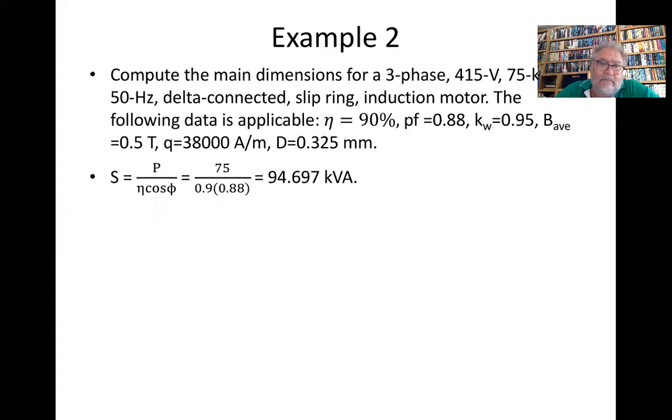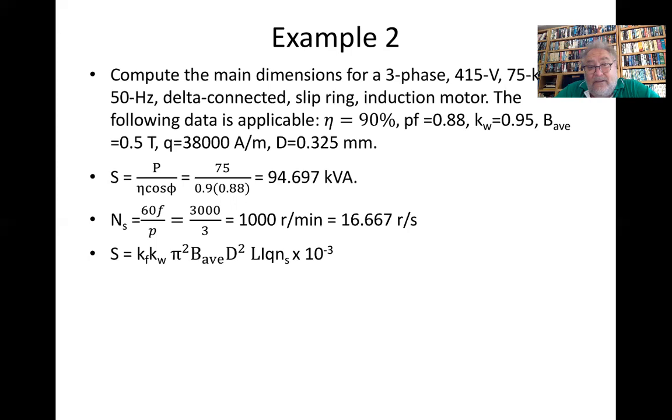Again, S = P divided by the efficiency, which gives us 94.697 kVA. Our speed is 1000 rpm, which is 16.667 revs per second.